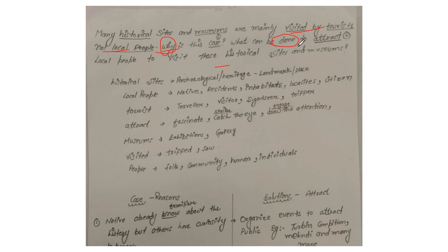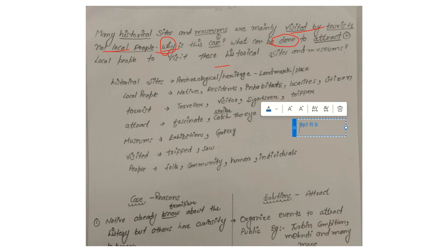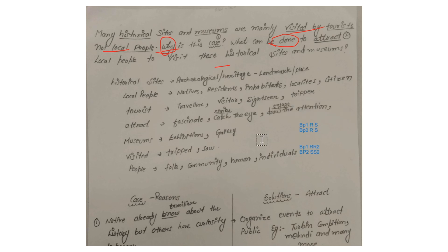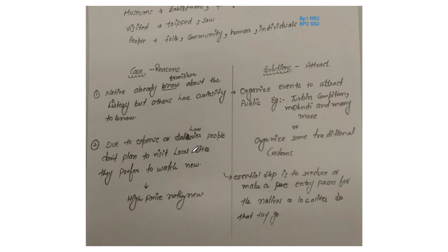The topic is reason and solution. What can you do in BP1? Give a reason and give it a solution. In BP2, give a second reason and give it a solution. If you don't do this in BP1 and BP2 separately, you can combine them — that is also fine. Don't do multiple points in one paragraph.